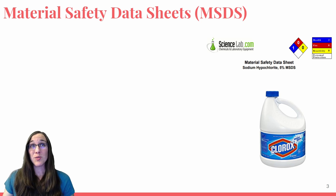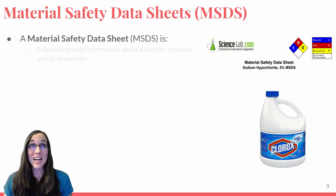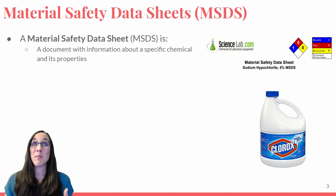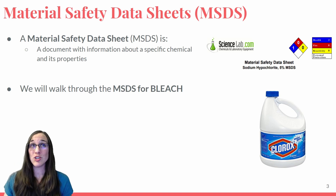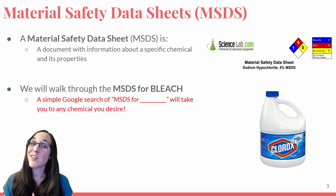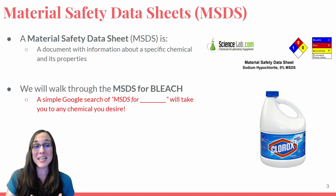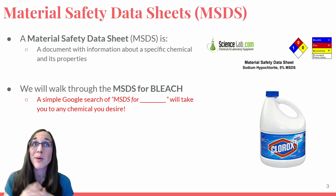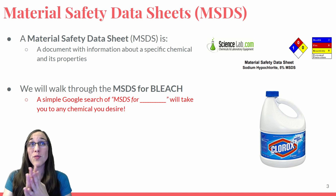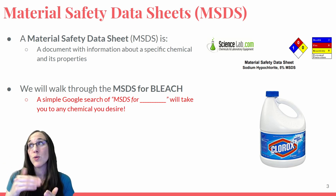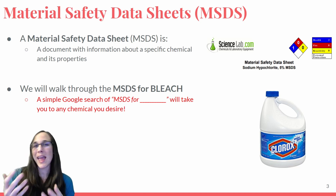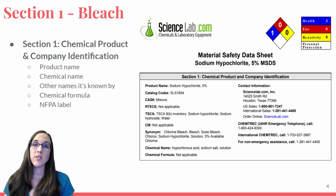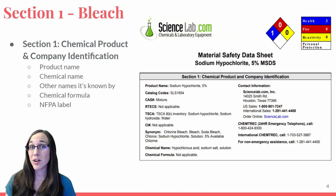Material safety data sheets, or MSDS, just as they imply, are sheets of data that contain information about a specific chemical of interest. We're going to walk through the MSDS for bleach. A simple Google search, or Bing search, or whatever kind of search you use — MSDS for blank, whether that be MSDS for corn syrup, MSDS for alcohol — will take you to the chemical you desire and all of the safety information we have on it.